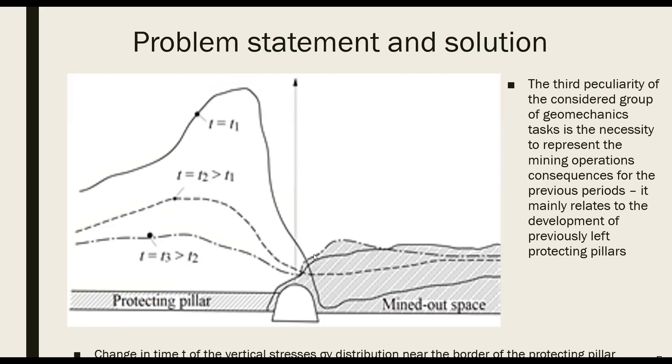It mainly relates to development of previously left protected pillars. For Western Donbas conditions, it is recommended to accept the following mechanical characteristics of collapsed and consolidated rocks: compression resistance in the range of 14 to 16 percent of the value for holistic lithotype state. The tensile strength is practically absent. For unambiguous calculation procedures, plus 0.1 MPa can be accepted. Deformation modulus is accepted in the range of 5 to 10 percent of the value for the holistic lithotype.